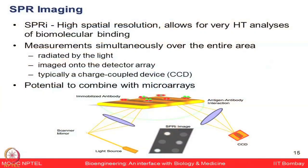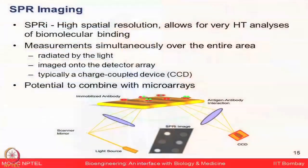Currently available SPR platforms can maximally use four channels to study four interactions simultaneously. However, in biological problems we may want to study hundreds if not thousands of such phenomena simultaneously. SPR imaging is a new platform that combines the power of both SPR and microarray-based platforms, with the ability to look at high spatial resolution for high-throughput analysis of biomolecular binding. Here you measure the entire area of the chip surface simultaneously, and the whole chip surface is irradiated by light, then imaged onto detector arrays and linked to a CCD device.